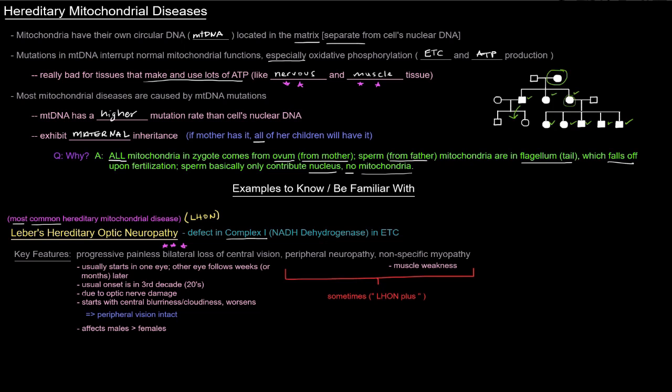The usual onset is in the third decade of life, which would be in an individual's 20s, because 0 through 10 is the first decade, 11 through 20 is the second decade, 21 through 30 is the third decade. This is due to optic nerve damage. It starts with central blurriness or cloudiness and it can worsen, but the peripheral vision can remain intact.